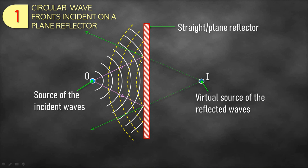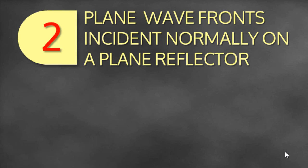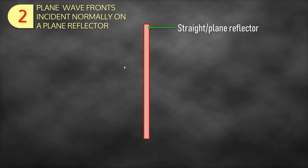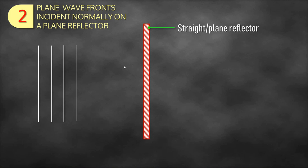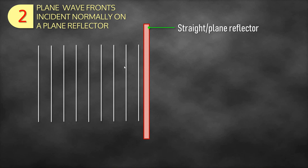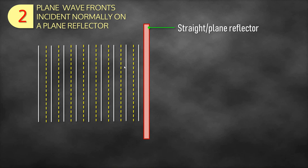To show how waves are reflected, look at the nature of the incident wavefronts and the nature of the reflected wavefronts, and indicate directions using rays. Case two: plane wavefronts incident normally on a plane reflector. The reflected wavefronts go back in the same way they came — the spacing between wavefronts is preserved, and the incident ray returns along the same path.